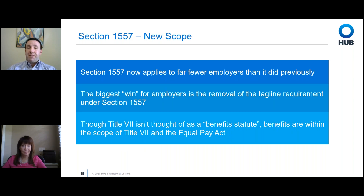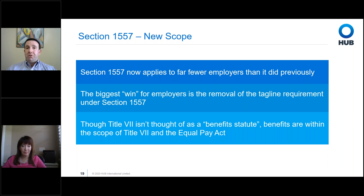Section 1557 now applies to far fewer employers than previously because they got rid of the definition of covered entity — only those that actually receive money from Health and Human Services will be subject to it. That means fully insured plans where the carrier receives money from HHS, but the employer does not, are no longer subject to 1557 just by virtue of having a fully insured plan. Overall, the biggest win for employers is the removal of the tagline requirement, which was really onerous.